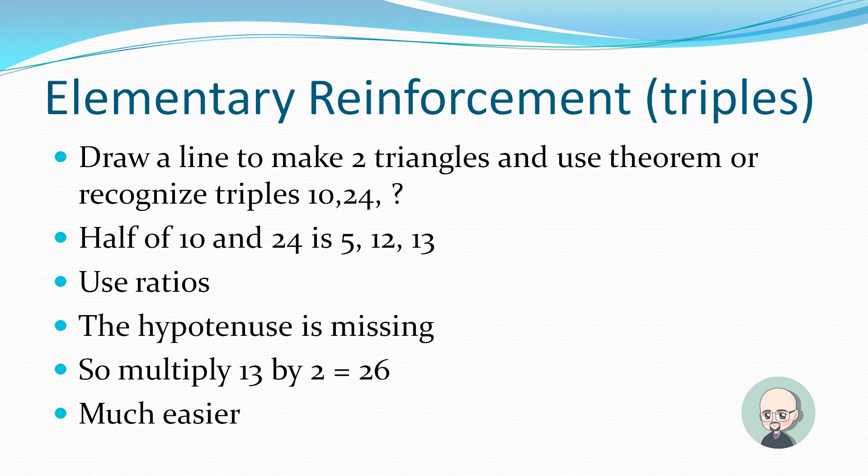Now let's look back at those triples that I mentioned. Half of 10 and 24 is 5 and 12. Now, seeing as how it's a right triangle, if you used ratios, do you remember ratios? You were wondering, oh, I'm never going to use a ratio again, Mr. Murdoch. But the hypotenuse is missing. Now if we multiply 13 by 2, we come up with 26.